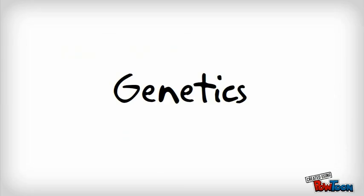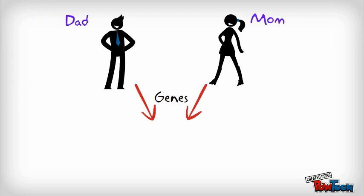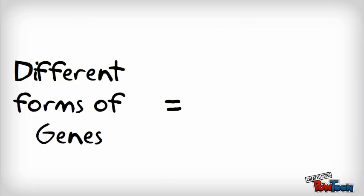Before we start investigating how your genes determine your traits, there are several things that you need to know. You already know that organisms inherit genes from their parents, and you also know that you don't look and act exactly like your parents. This is because not all genes are the same — there are often several different forms of genes, and these different forms of a gene are called alleles.